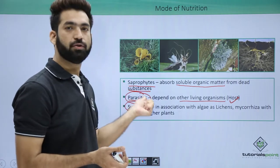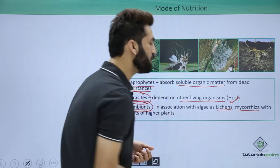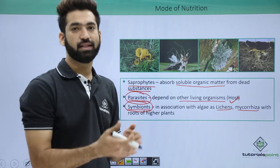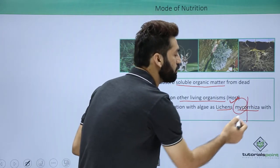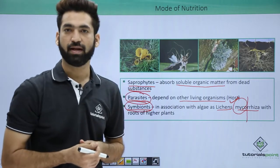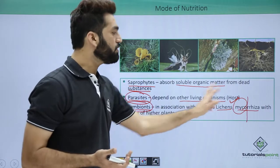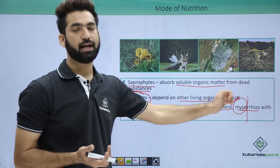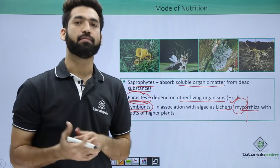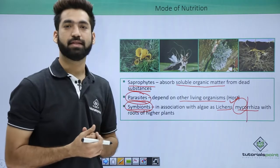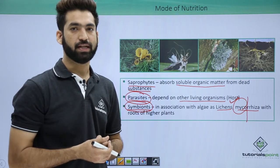Fungi also form symbiotic relationships in the form of lichens or mycorrhiza. Lichens is the association of fungus with algae. Mycorrhiza — 'myco' referring to fungus and 'rhiza' referring to plant roots — is the association of fungus with plant roots. In both cases, whether associated with algae or higher plants, each partner does something for the other. This is how fungus engages in symbiotic relationships, showing all modes of heterotrophic nutrition.